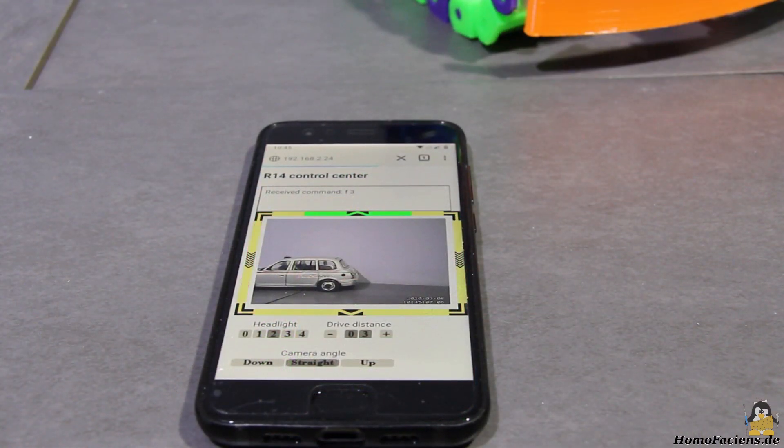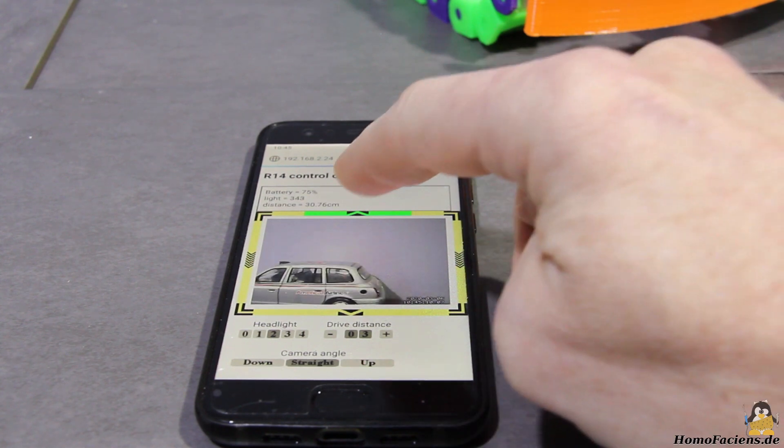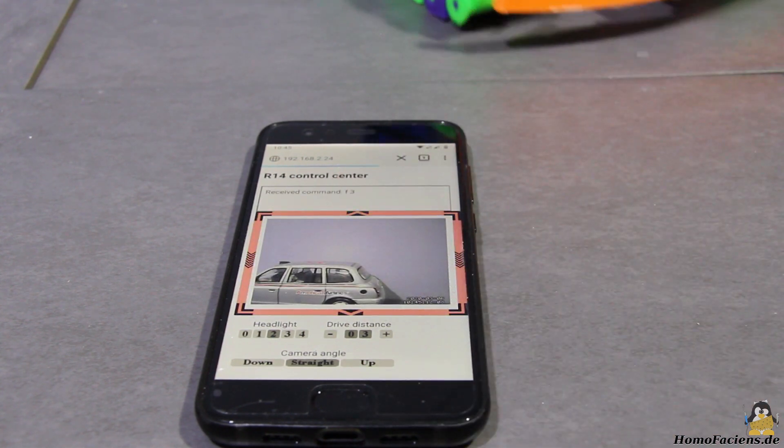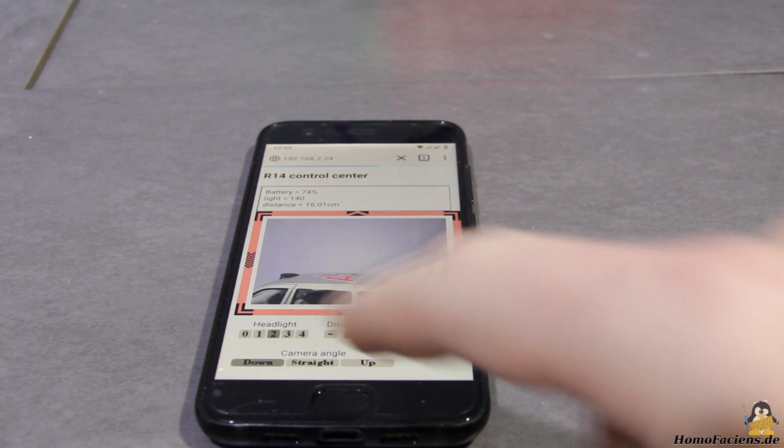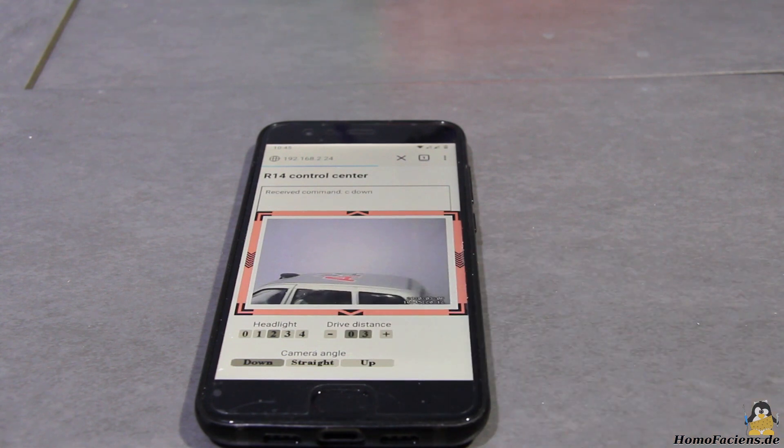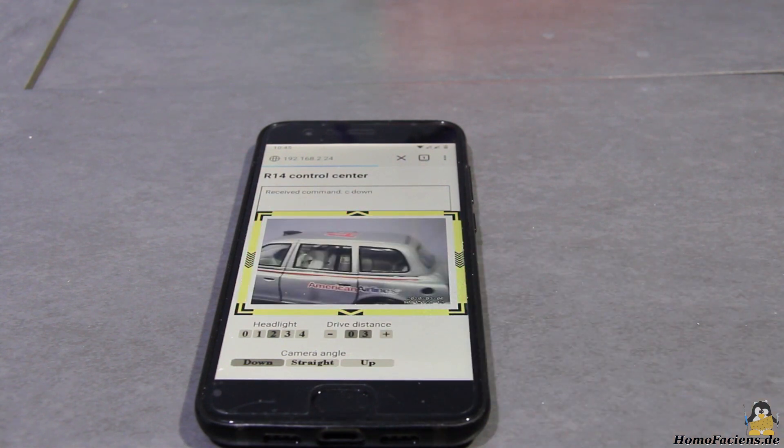Like all my robots, R14 is also accessible via the internet. Simply open the control page in your browser and explore my RoboSpatium. Here I'm using my smartphone to do so. The whole thing works without registration and is free of charge, at least for you.